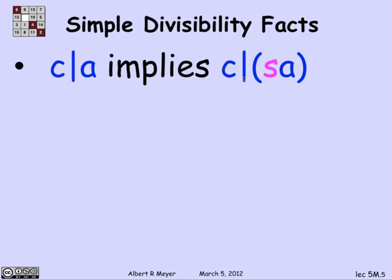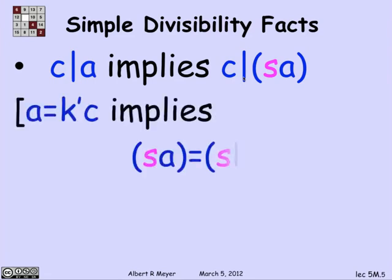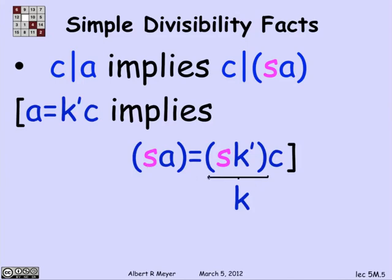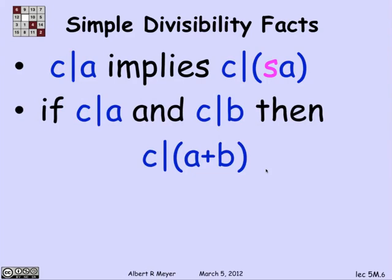A trivial fact from the definition: if C divides A, then C divides any constant times A. To verify: if C divides A, that means A equals K-prime times C for some K-prime. Multiplying both sides by S gives SA equals SK-prime times C. Parenthesizing SK-prime as K, we find SA is a multiple of C. That's a trivial proof — we're just practicing with the definitions.